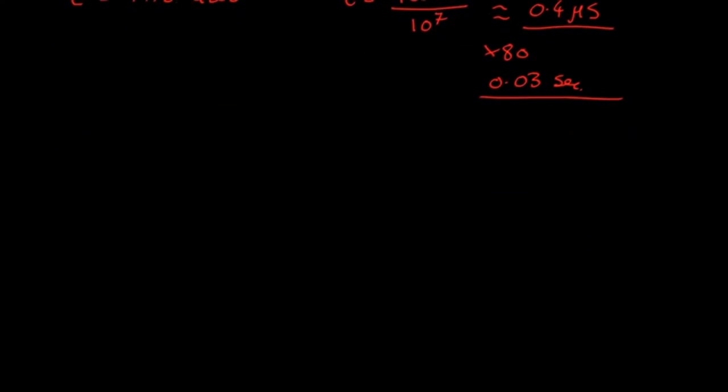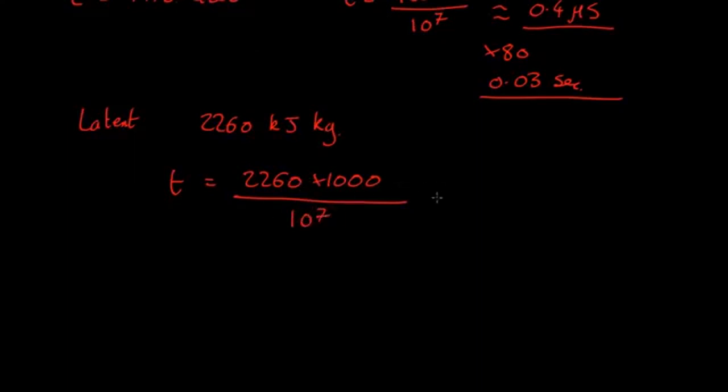It then has to boil them. To boil something, you need to use the latent heat. Latent heat of vaporization of water is 2,260 kilojoules per kilogram. That's how much energy you need to put into water at 100 degrees centigrade to turn it into steam at 100 degrees centigrade. You can work out how long it takes to produce that. The time will be the energy we need—2,260 kilojoules times 1,000 joules—divided by the power. Power is energy per unit time, so energy divided by energy per unit time gives us time. 10^7 gives about 0.2 seconds.